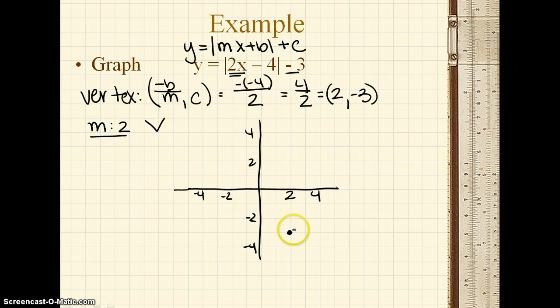Anytime you're dealing with slope on absolute value, you do not just go one direction. You either go up or down, but then you always go both left and right. Okay, so we're going to go up 2, to the right one, and to the left one, connect your dots, and you're done. There's nothing else to do on this graph.